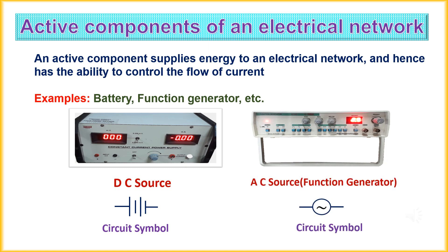An active component supplies energy to an electrical network and hence has the ability to control the flow of current. Examples are battery which is a DC source and function generator which is an AC source.